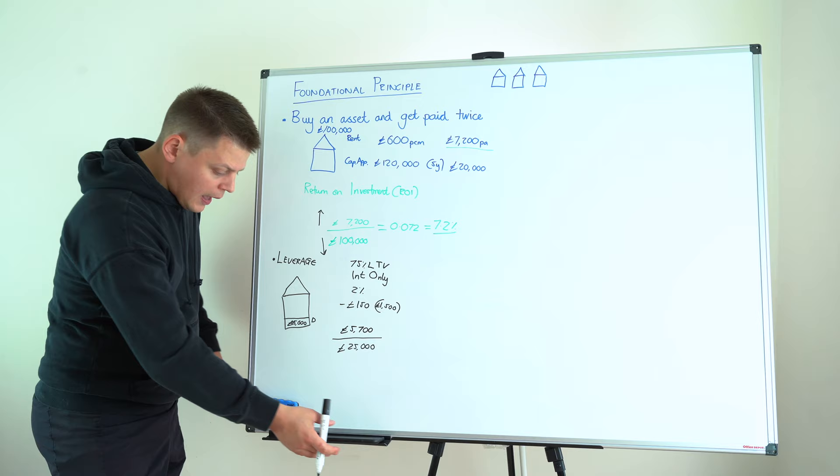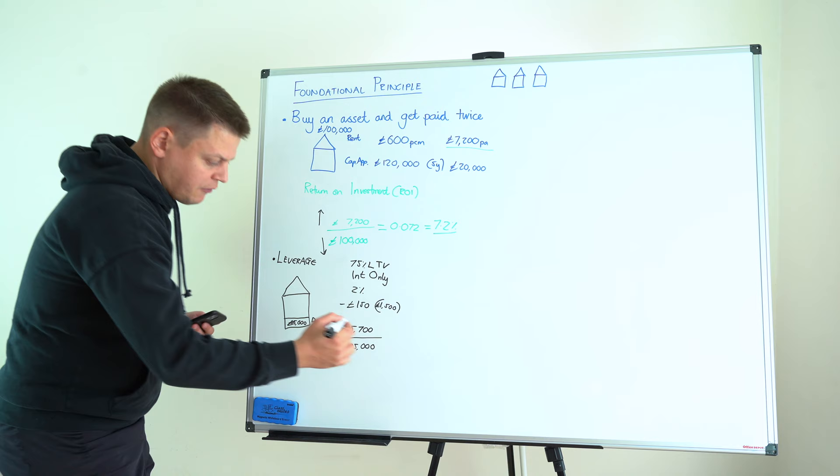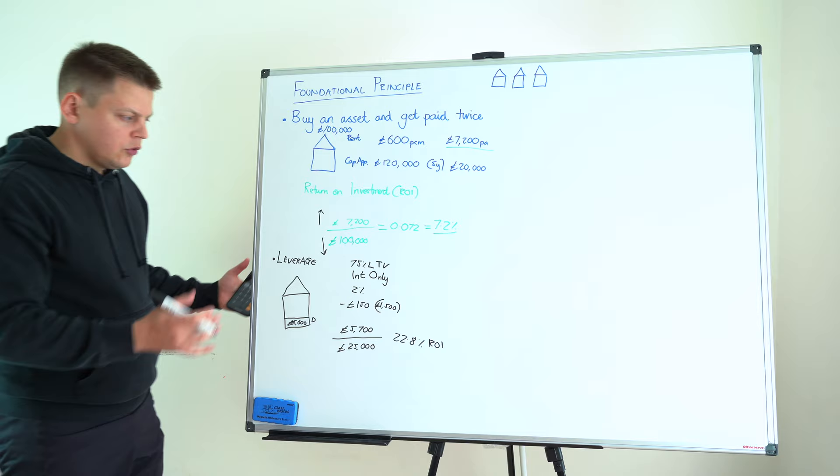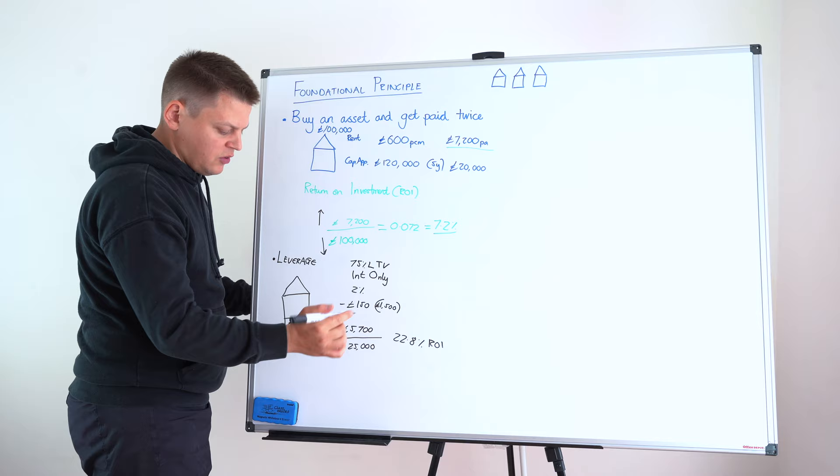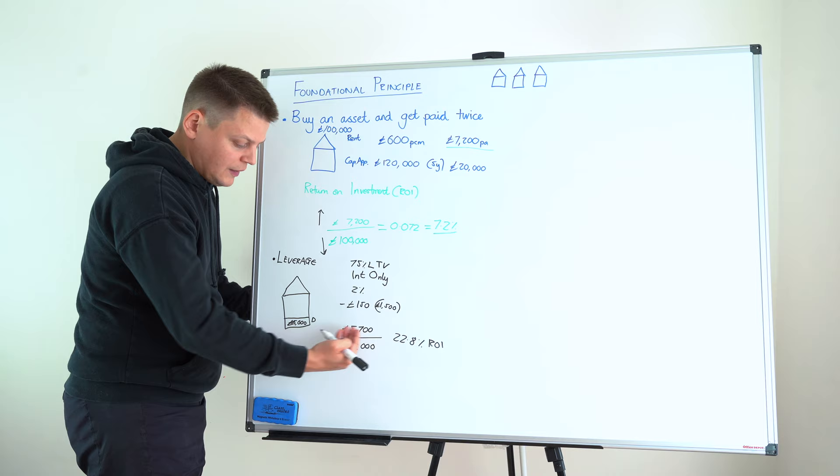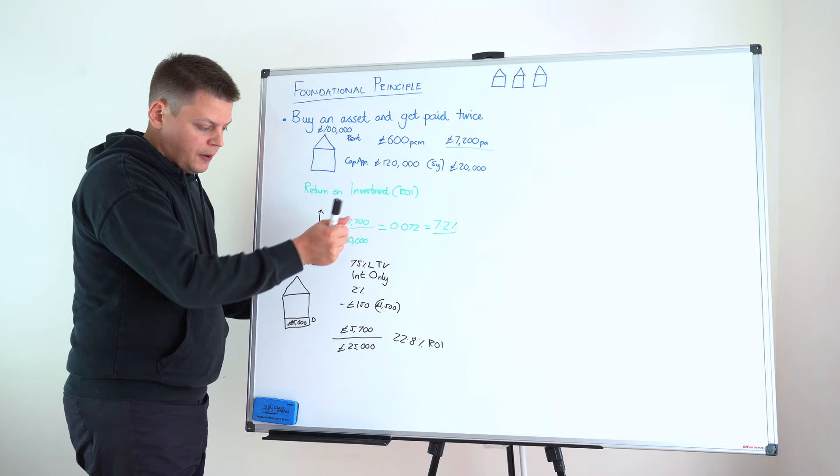And if we put this now as a fraction, £5,700 of the £25,000 we have to put in, it gives us a return of 22.8% ROI. So, the whole purpose of this video is to understand how we can increase our net worth. The rate by which we measure that increase is return on investment. And by buying with a mortgage, the principle of leverage, we have just reduced our own investment down to £25,000. We have lost a little bit of the profit, but proportionally, these are much closer than these are, which means our return has now gone from 7.2% to 22.8%. And in the next video, we're going to see how we can increase that still further.